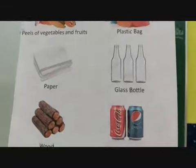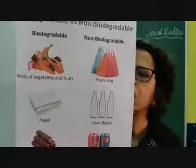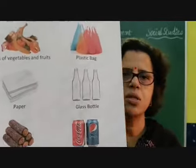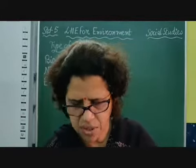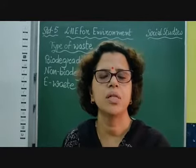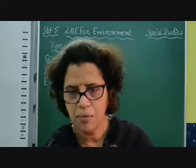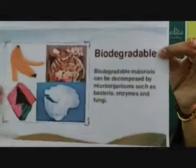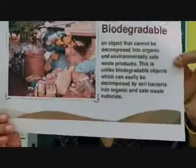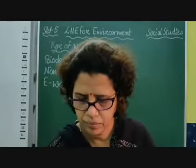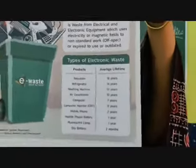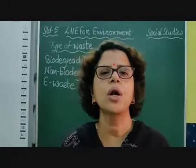Okay children, your vegetable or kitchen waste mixes with the environment and becomes organic manure. Paper, wood, dry leaves, dead animals and plants, and waste products of animals and human beings are all biodegradable. So we have discussed three broad categories of waste: biodegradable waste, non-biodegradable waste, and e-waste. Thank you, children.